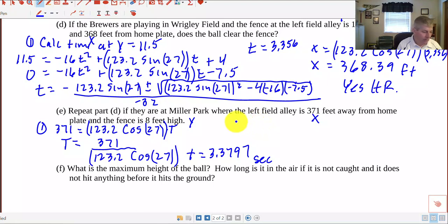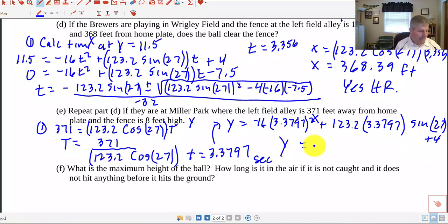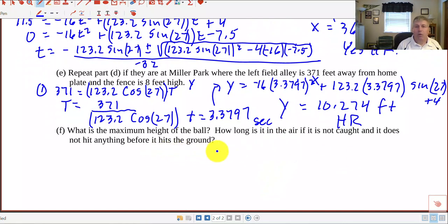So now we substitute that into Y, come up here to Y and Y equals negative 16 times 3.3797 squared plus 123.2 times 3.3797 right that's our T sine of 27 plus 4 put that all in our calculator and we get a Y equals 10.274 feet after 3.37 seconds it's gone 371 feet and it's still 10 feet in the air so that's above the fence by 2 feet that would also be a home run again pending an awesome defensive play.